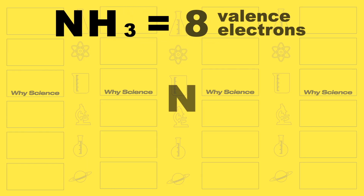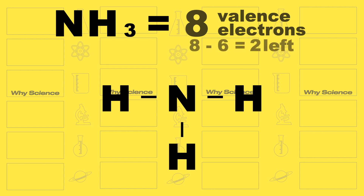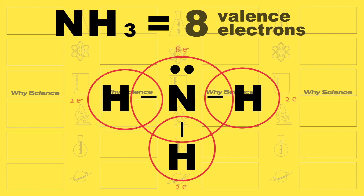Let's have another example. Ammonia, which is composed of nitrogen and 3 hydrogen atoms, has a total of 8 valence electrons. Draw your 3 hydrogen atoms around nitrogen — you should have 3 single bonds, which is 6 electrons already. Subtracting from your original total of 8, you still have 2 left. The nitrogen atom only has 6 electrons, so you put the 2 remaining as a lone pair on the nitrogen atom, and now everyone follows the octet rule.